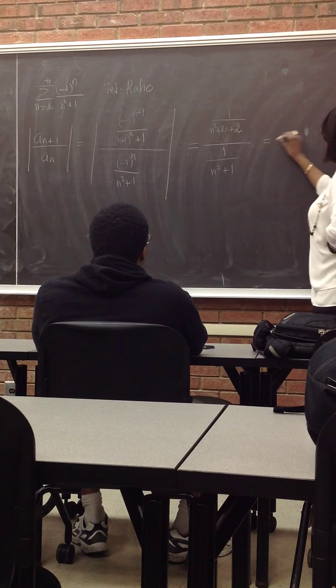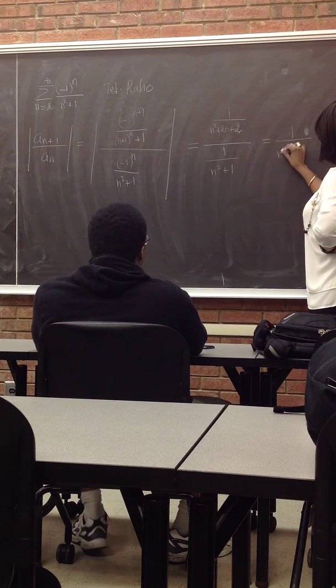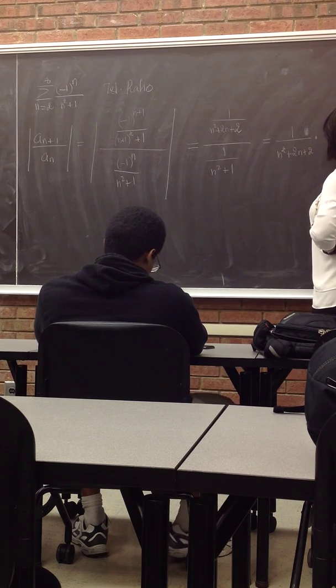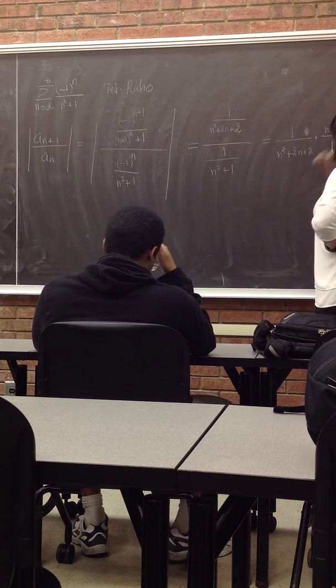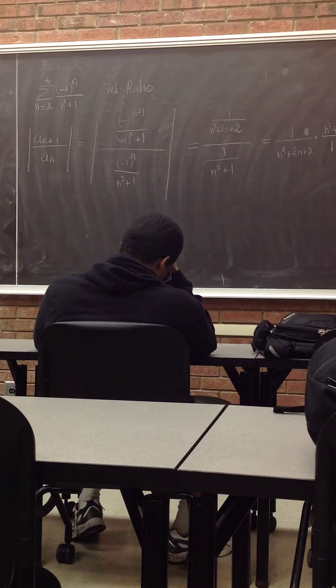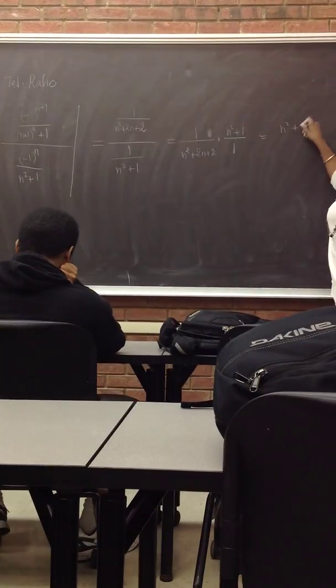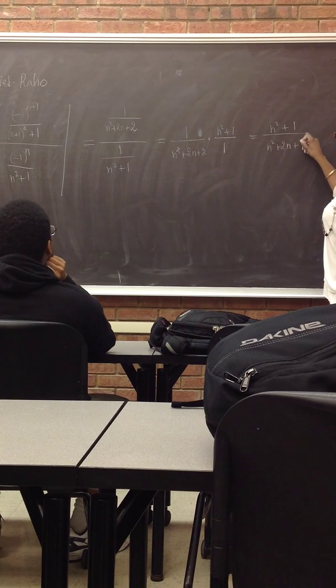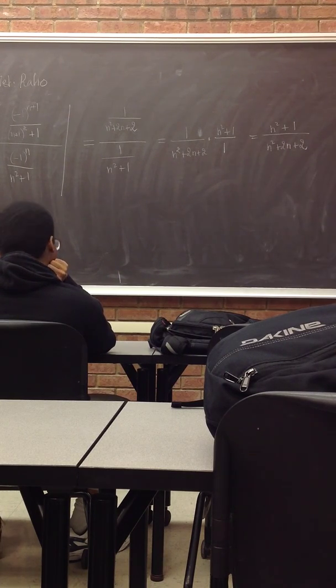Now we simplify by flipping the second one. So this means N squared plus 2N plus 2 multiplied by N squared plus 1 over 1, or N squared plus 1 over N squared plus 2N plus 2. So that's how it's happening.